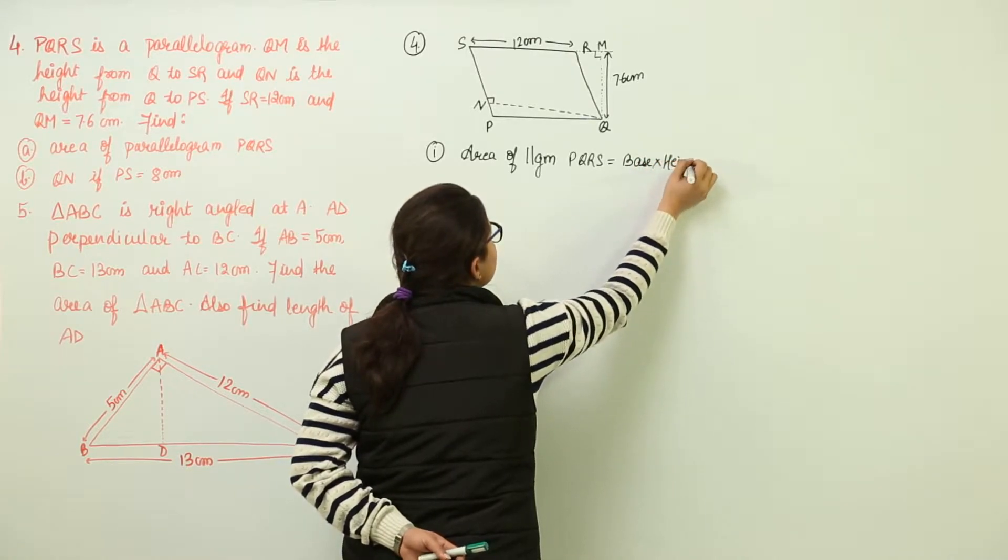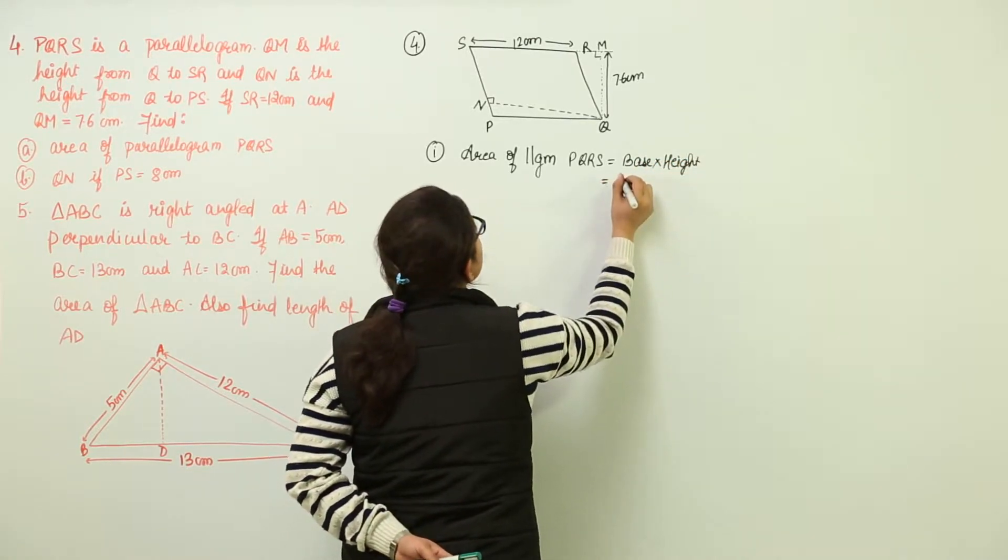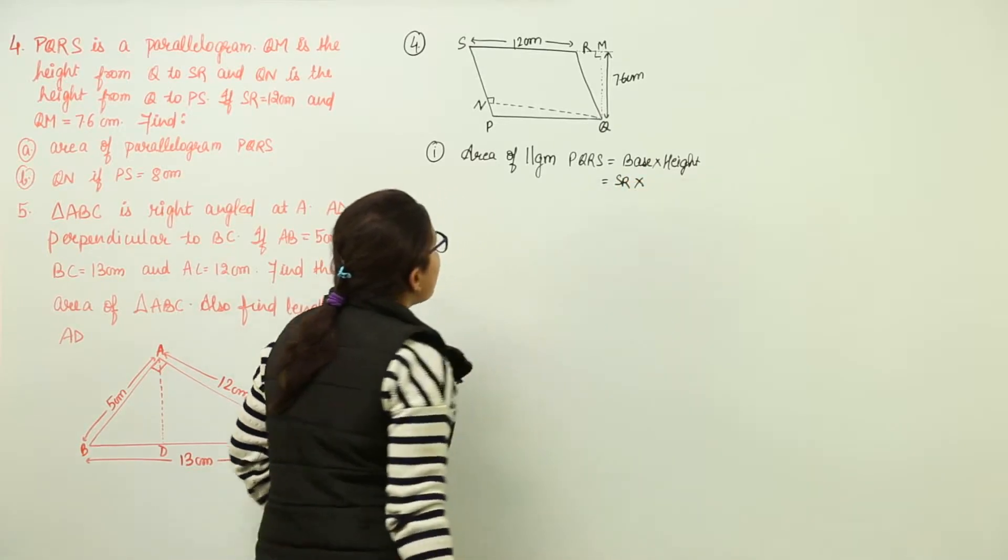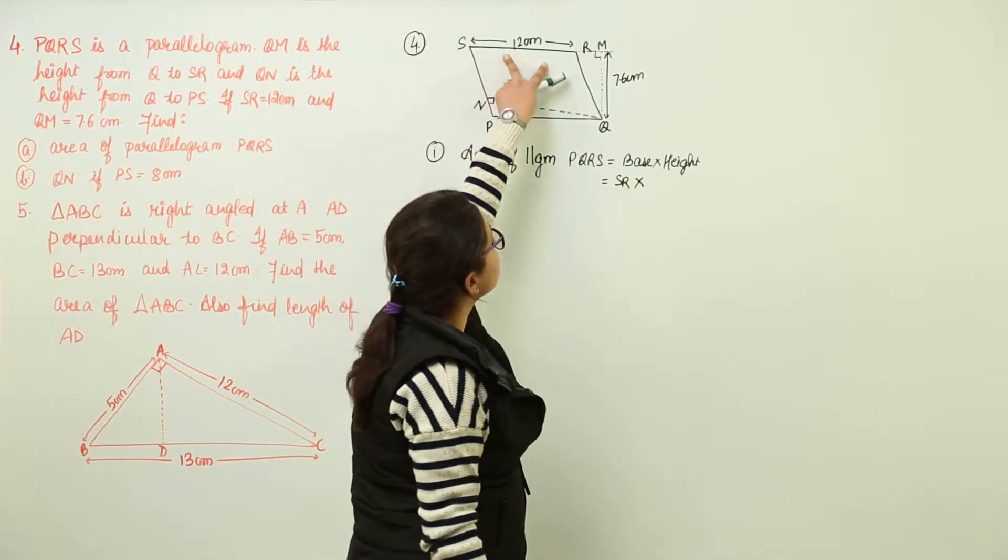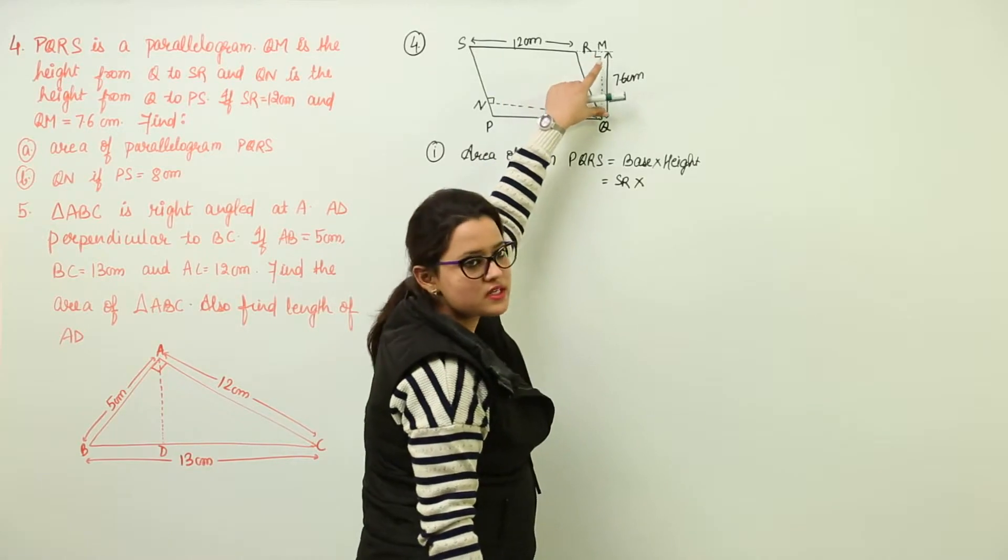And what is the base? If you take SR as the base, the height for SR is going to be QM only.